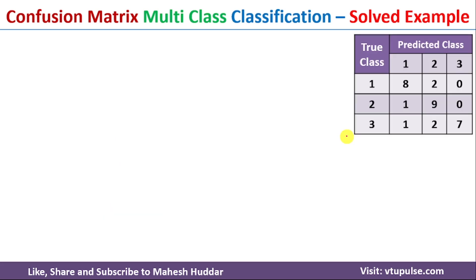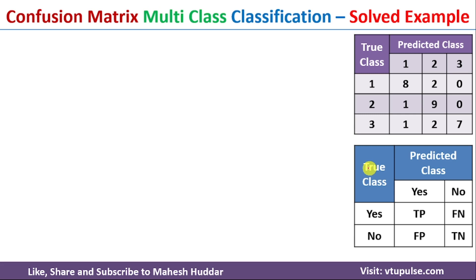Before we calculate the different performance metrics, we first need to convert this multi-class classification confusion matrix into a binary classification confusion matrix. It looks something like this — true classes on the vertical axis, predicted classes on the horizontal axis. This particular confusion matrix contains two classes: the first class is 'yes' and the second class is 'no'.